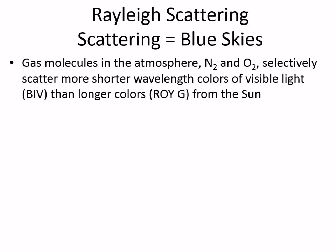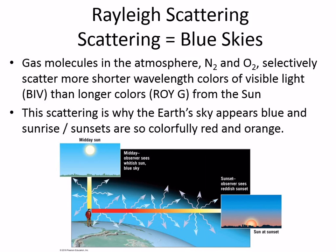The thing about the Earth's atmosphere is it's nitrogen and oxygen. When the sun is high in the sky, the sun sends all colors of the rainbow, and the short wavelengths — blue, indigo, and violet — are scattered out by the atmosphere. They run up against particles and scatter, and that's why the skies are blue.